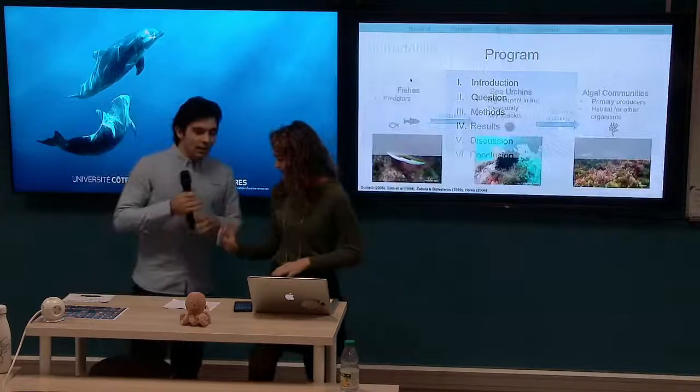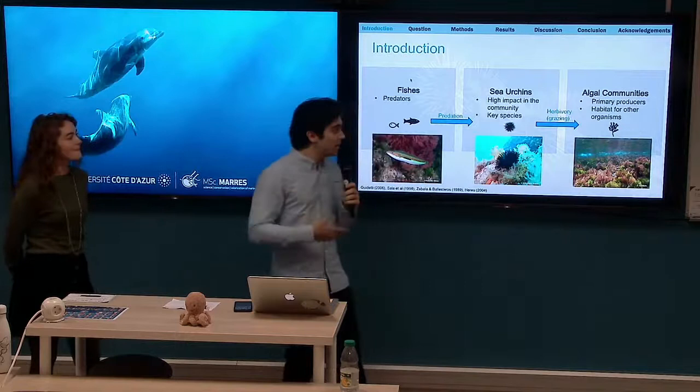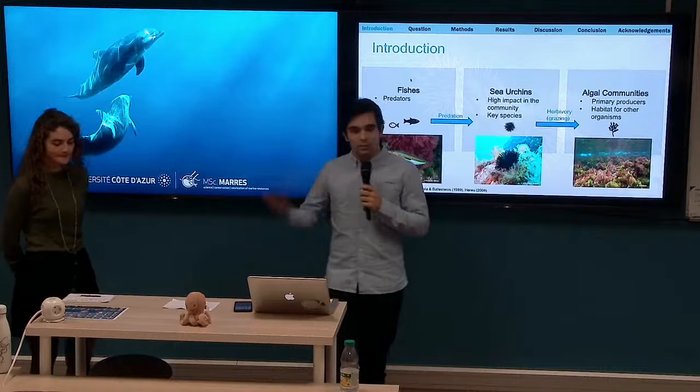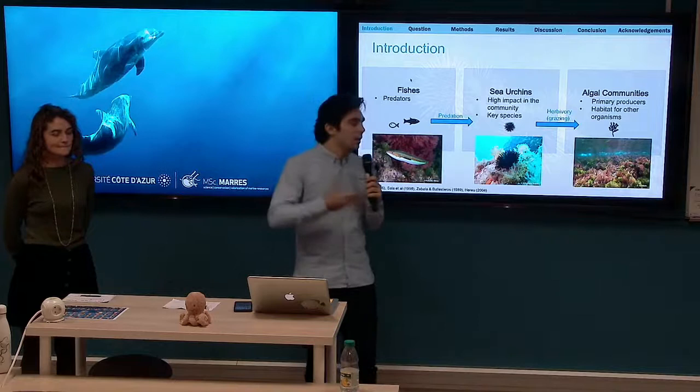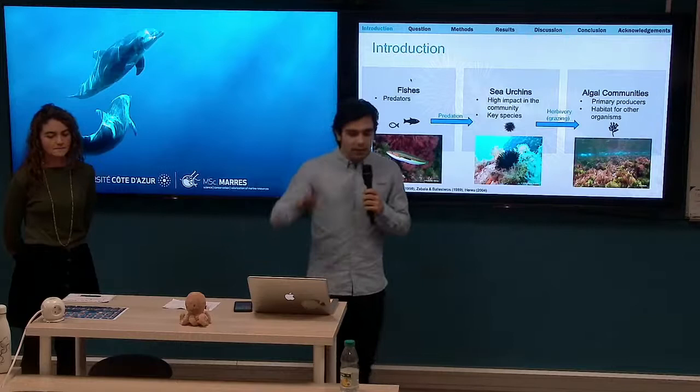We are going to talk about some fishes, some sea urchins, and some algae. First, why talk about sea urchins? They are considered key species in some marine environments and they can have a high impact on communities, especially on the algal community because of grazing, since sea urchins are mostly herbivorous and eat algae. They are regulated by fishes, which are predators of the sea urchins.